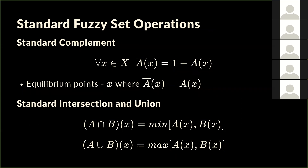Unlike normal sets, there is no single strict function required for fuzzy set operations. The standard operations define: the standard complement of a fuzzy set, where the membership grade of the complement of A equals one minus the membership grade of A. So if element X had membership A(x) in set A, its membership in the complement of A is 1 - A(x). Equilibrium points are where the membership grade in a set and its complement are equal.